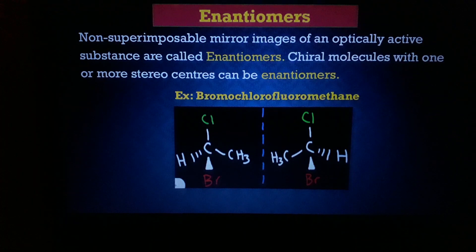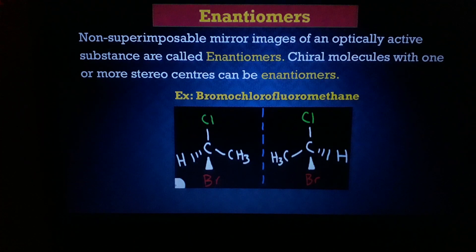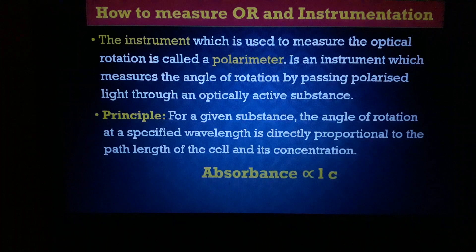Based on the number of chiral centers, we can calculate how many enantiomers exist. If there are n chiral centers in a compound, it will give 2^n isomers.